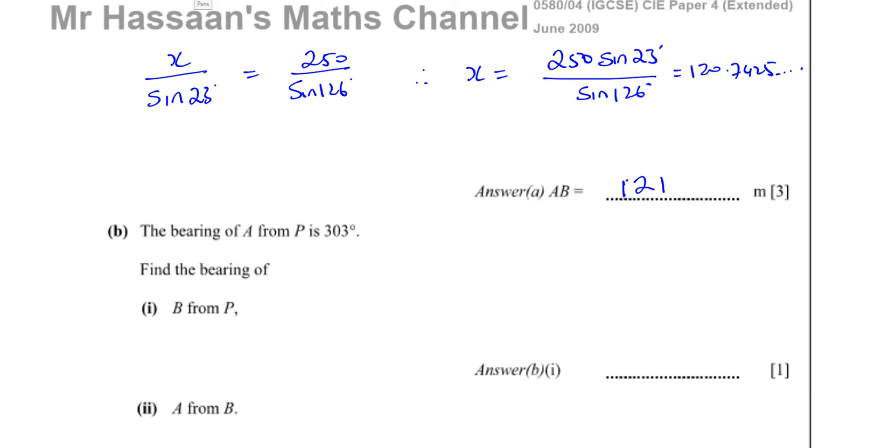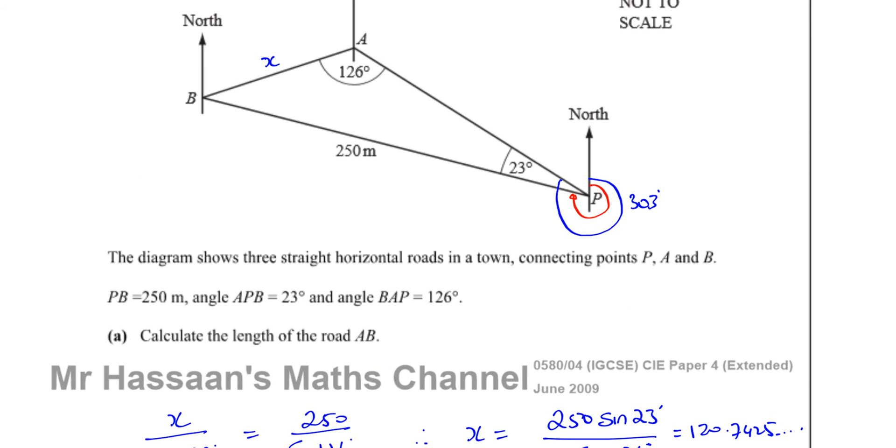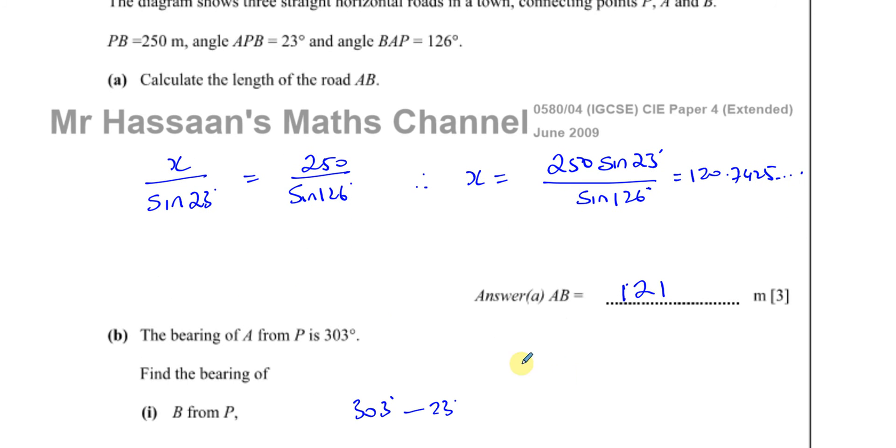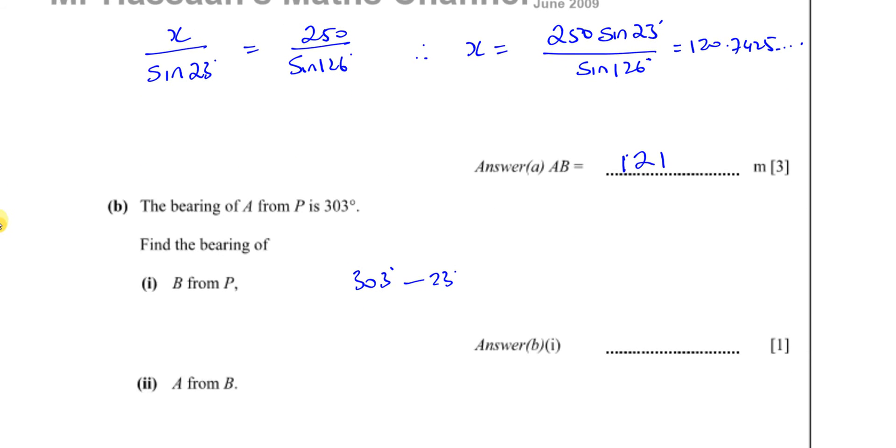The bearing of B from P is given by 303 minus 23, which gives us 280 degrees.